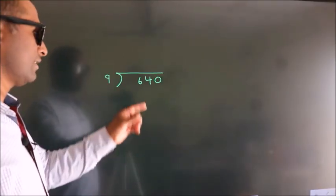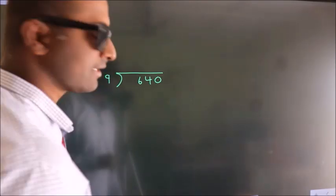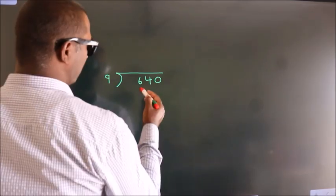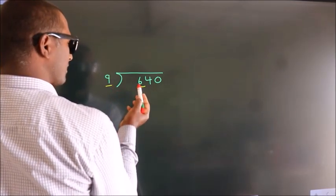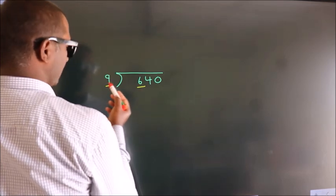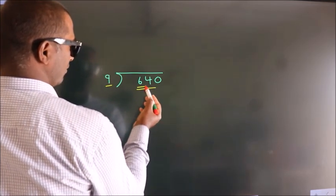How to divide 640 by 9? See, here we have 6. Here 9. 6 is smaller than 9, so we should take two numbers: 64.